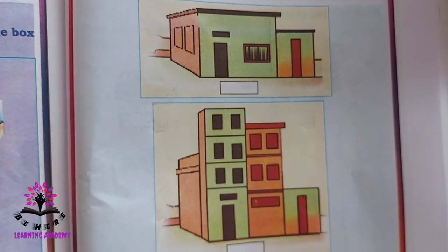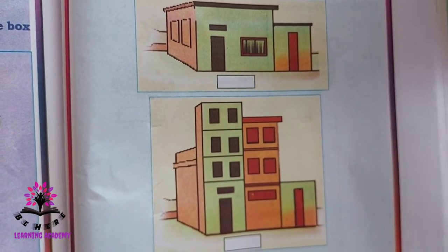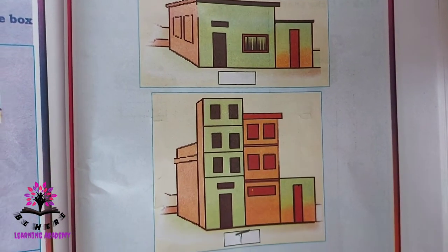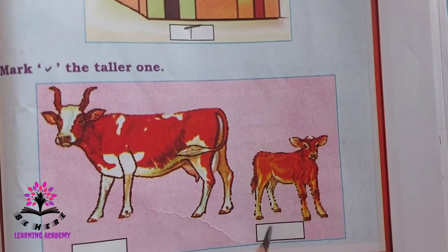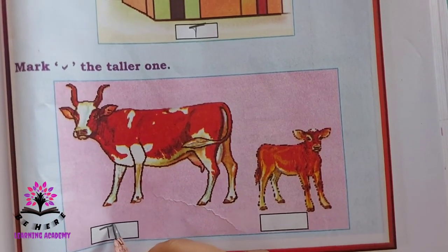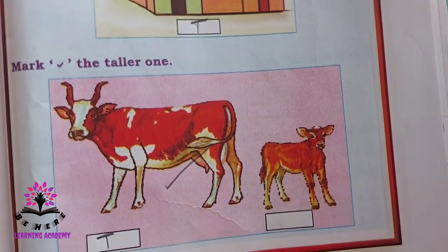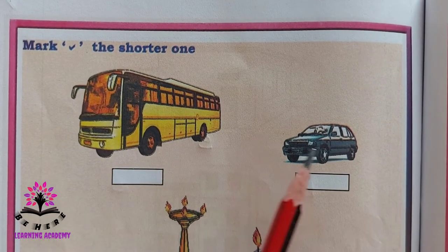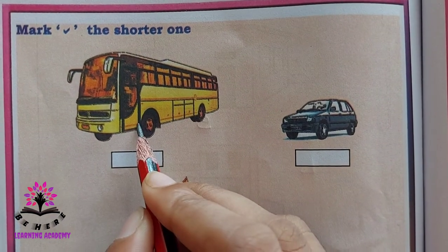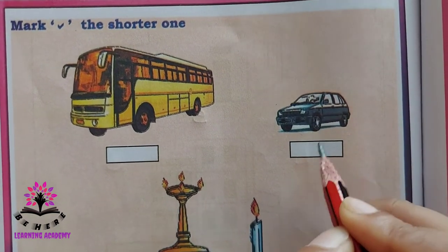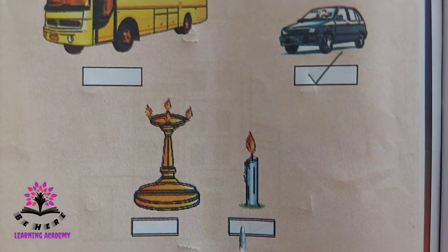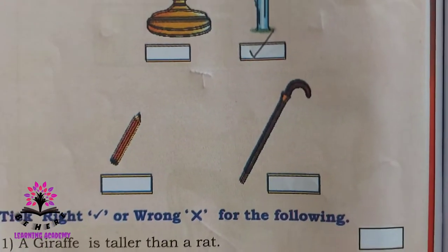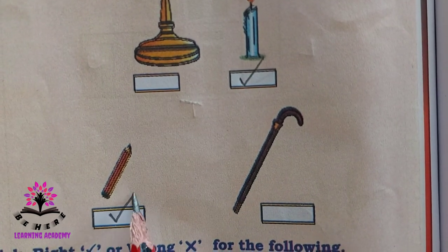See these houses — which is taller, the first one or the second one? The second one is taller and the first one is shorter. Mark the taller one — this cow is taller, so mark the cow. Bus and a car: the bus is bigger and the car is shorter, so tick the car. A lamp or a candle — the candle is shorter. A pencil or a stick — the pencil is shorter.